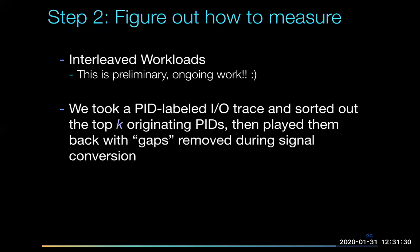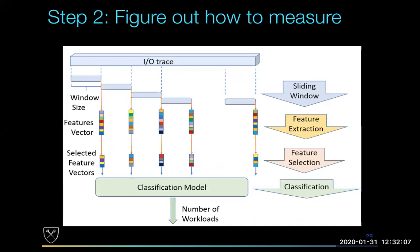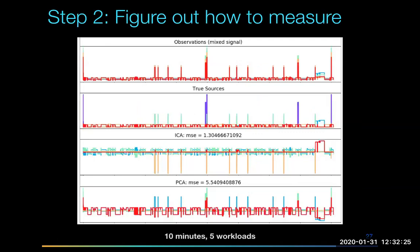Jumping to interleaved workloads and multi-tenancy: when we have ground truth, we can do deconvolution using ICA. At the top is the mixed signal and below are the true sources — we do pretty well. Even with simple ICA on this mixed workload we get reasonably good mean squared error. The challenge is we don't always know how many workloads we have. Even if you tell me five people are using the system, you haven't told me they're using it differently. The goal is to figure out how many distinct use cases are happening — if you have 100 clients but only 2 real workloads, I want to design two subsystems, not a hundred.